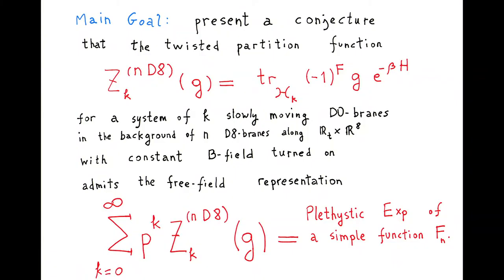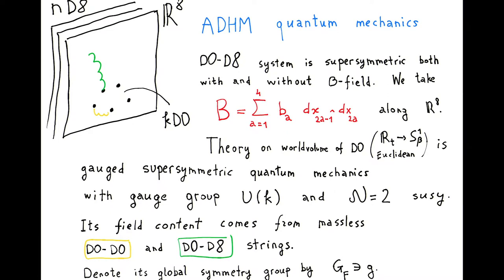Another way of looking at this: the slowly moving approximation is the same as taking the alpha-prime-to-zero limit while rescaling the B field so that alpha-prime times B remains constant. One would like to study what is the effective action for this system. I call it ADHM quantum mechanics because it is some generalization of ADHM. It's quantum mechanics because we are looking at the theory on the world volume of D0 — so it's just time.